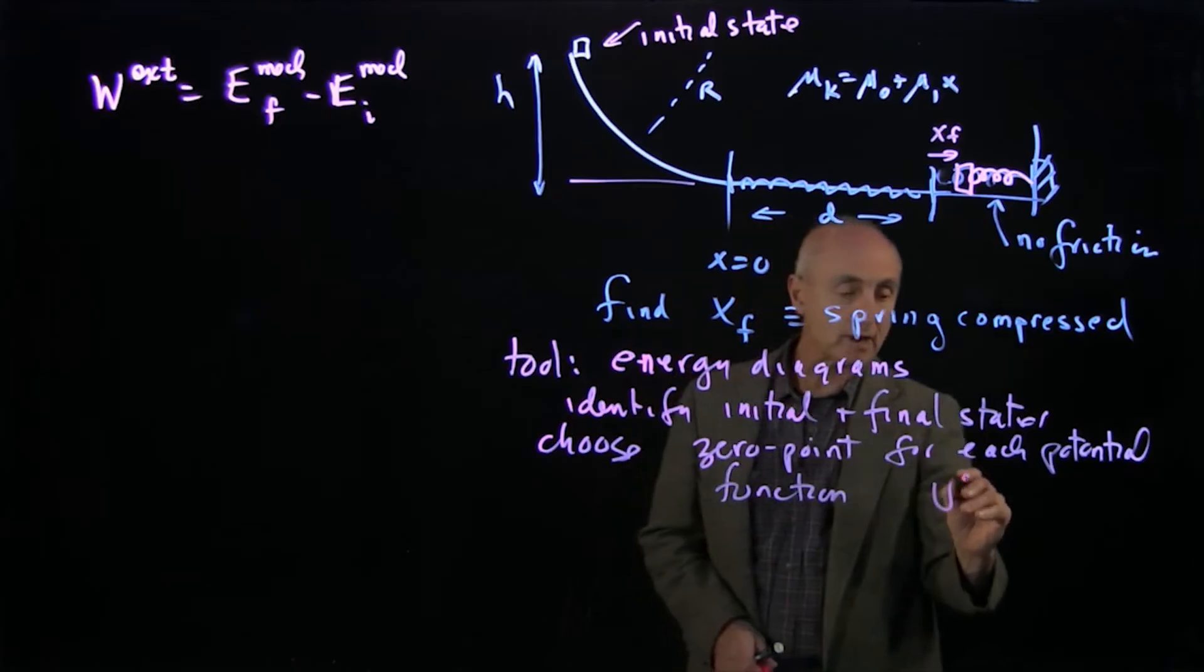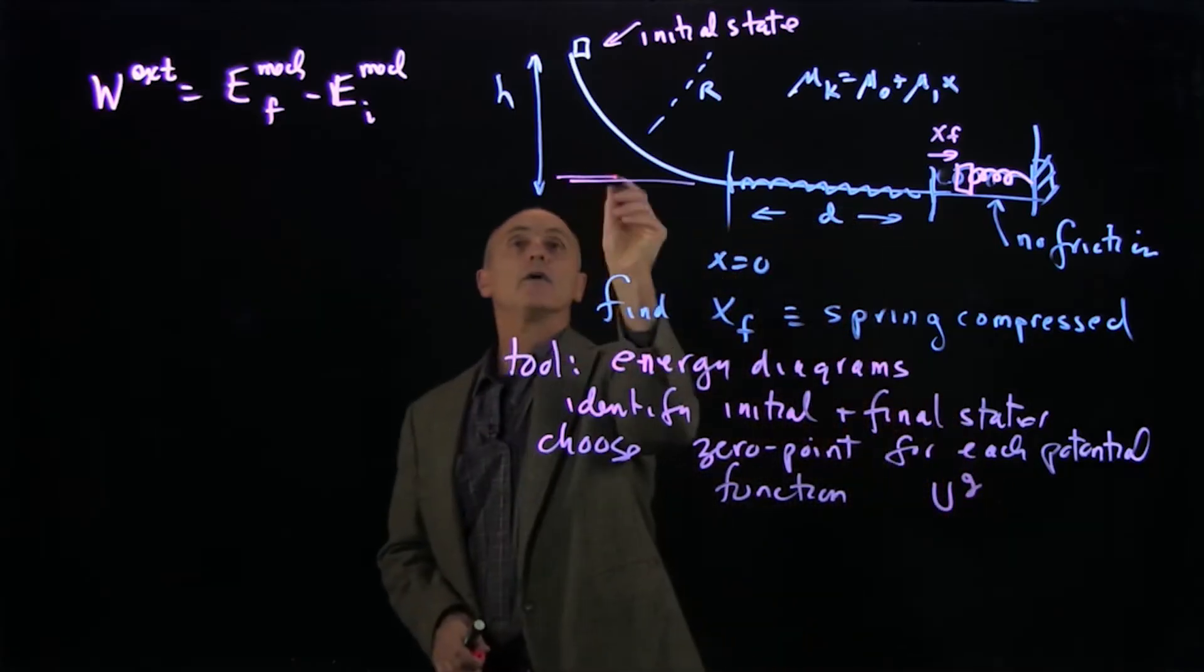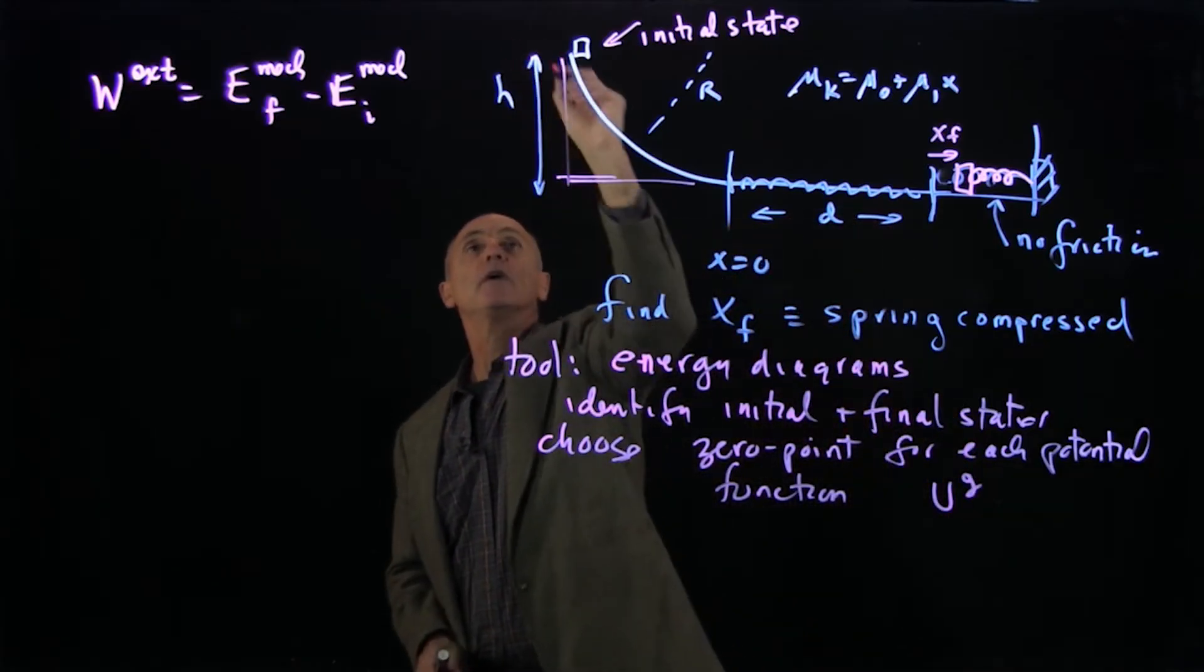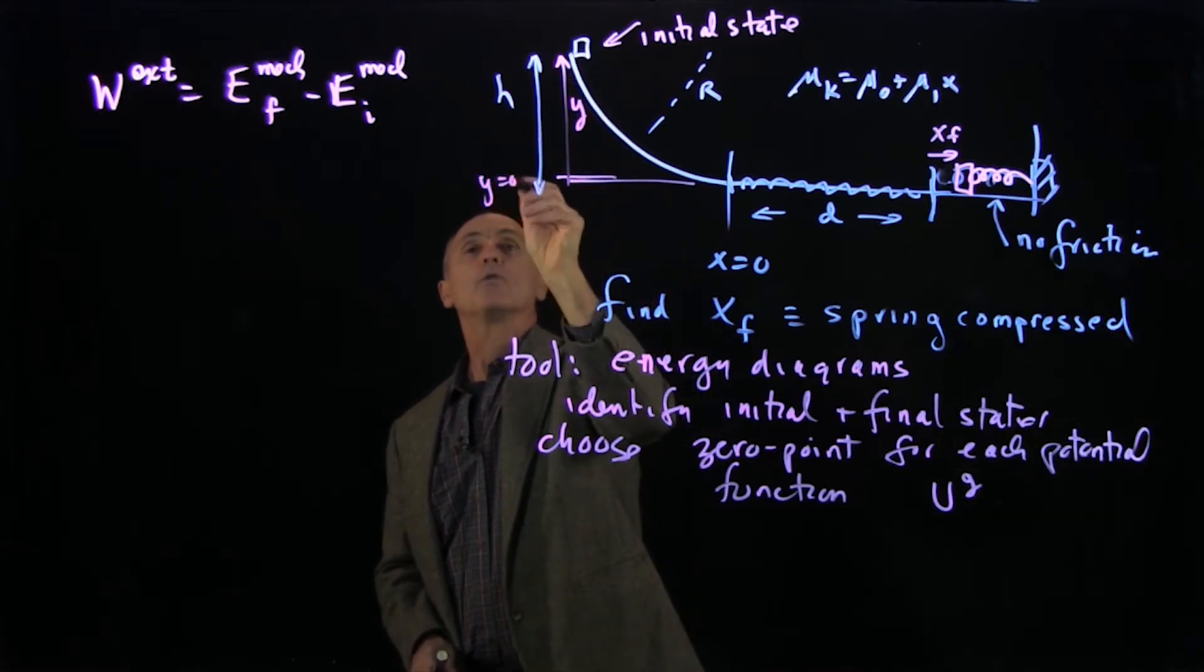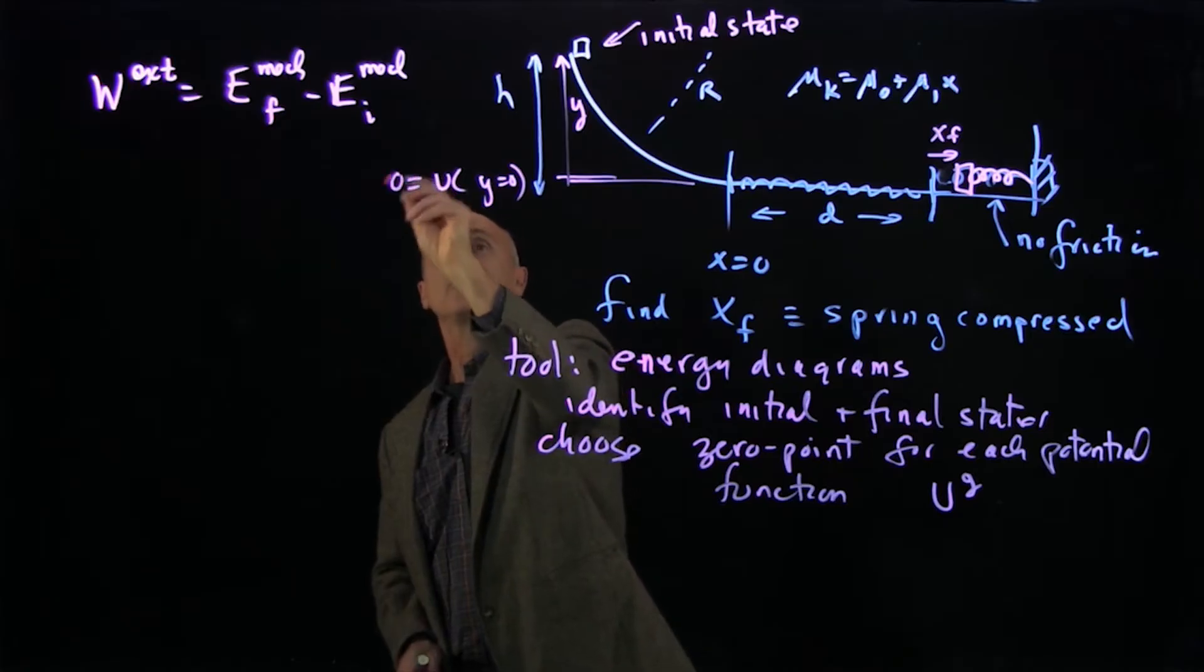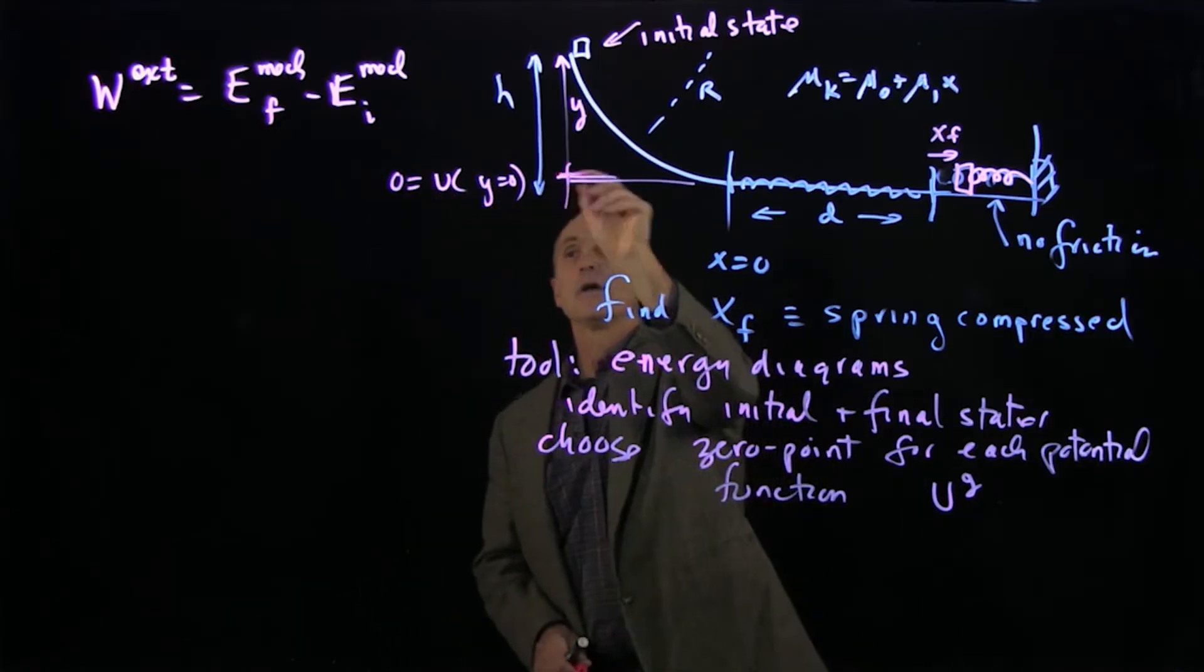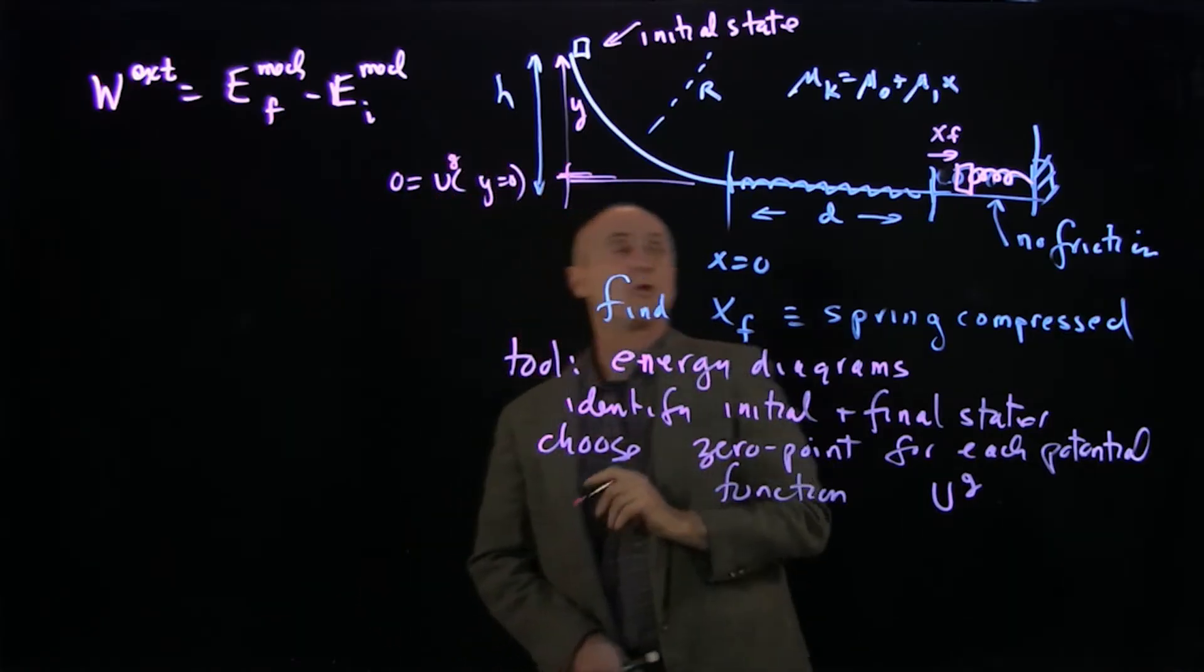So for the potential energy of gravity, here if we chose this to be y, then this is y equals 0. And u at y equals 0 is 0. And we'll call that the zero point for gravity.